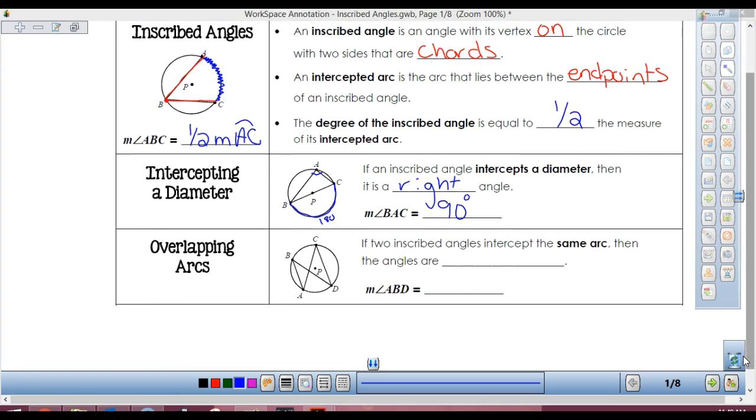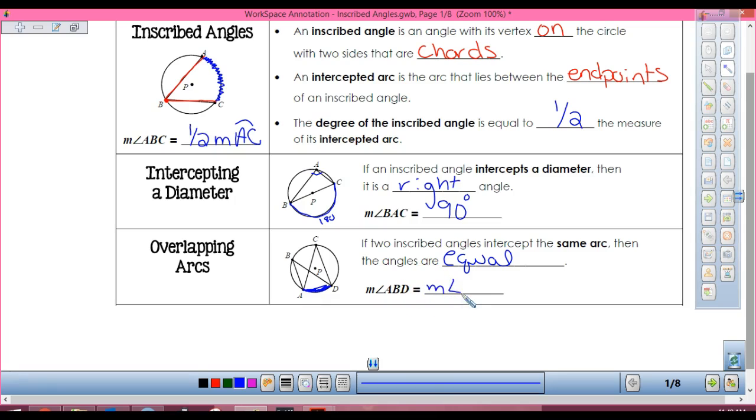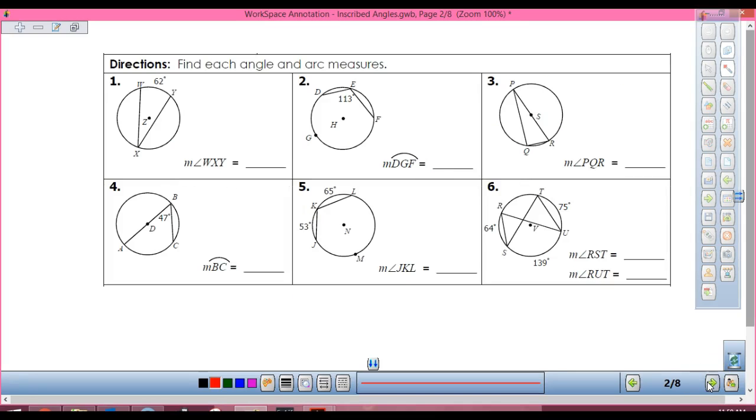And then if two inscribed angles intercept the same arc, then the angles are going to be equal. So ABD is this angle right here. And so this is my arc that ABD intercepts. Is there another angle? What other angle goes with that arc? ACD, yep. And because that angle intercepts that arc, and so does ABD, they both end up intercepting that same arc. Does that make sense? Alright, so let's talk a little bit about some of these.